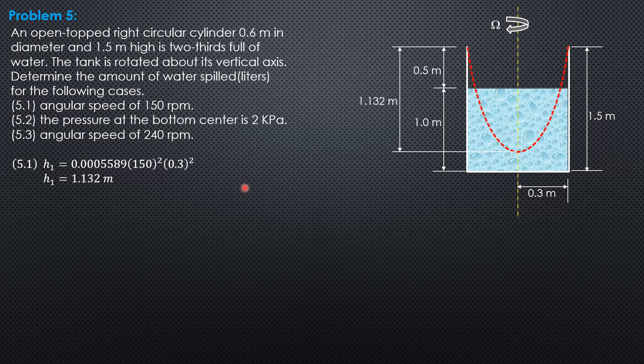The analysis is: the volume of liquid or water spilled would be the difference between the volume of this paraboloid with one base and the original volume of air, which is pi times 0.3 squared times 0.5. The volume spilled is pi over 2 times 0.3 squared times height 1.132, minus the original volume of air pi times 0.3 squared times 0.5. The whole of these two terms should be multiplied by 1,000 to convert it to liters. So volume spilled in part 1 is 18.66 liters.